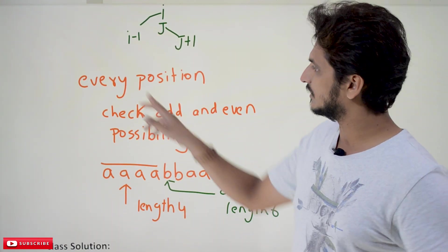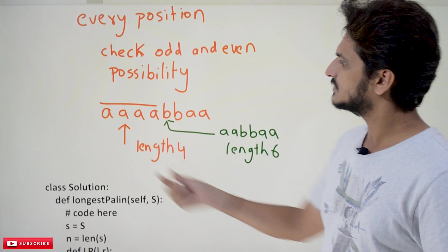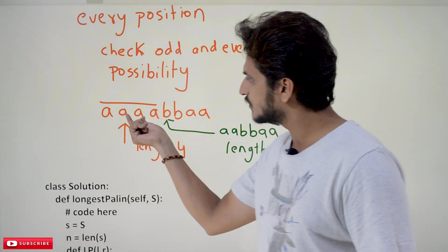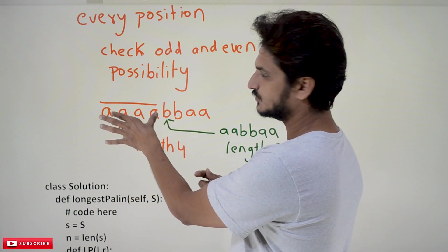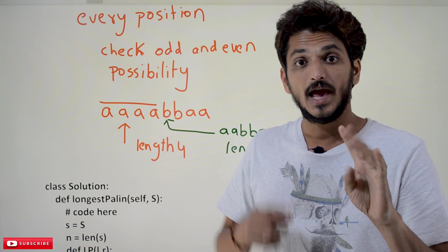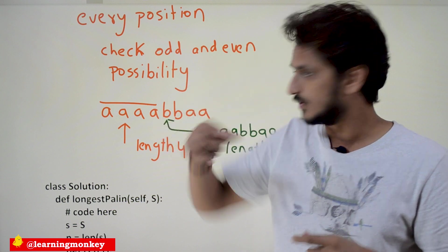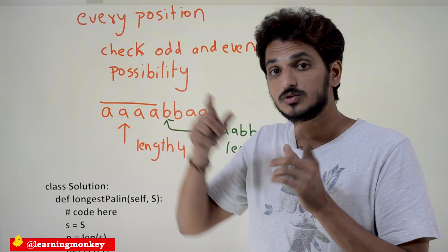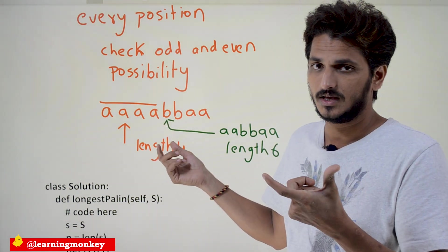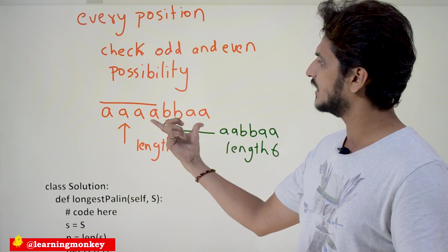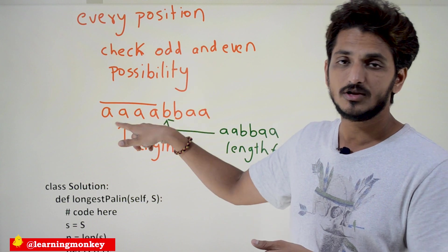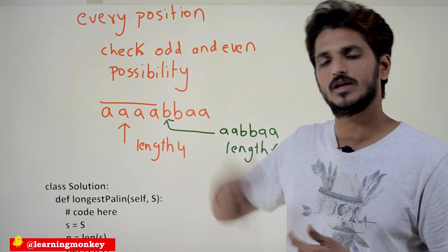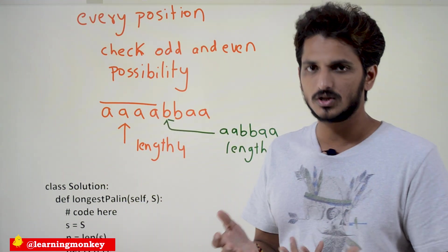Apply this logic to each and every position in the string. At every position, check both the odd and even length palindrome possibilities. Take the first position, apply even and odd length checks. Take the second position, apply even and odd checks. Every time, maintain a global variable for the count or length of the identified palindrome. Each time you identify a palindromic substring, compare its length and update the global variable to keep track of the maximum length. Keep updating the global variable, and based on that, display the resulting string.